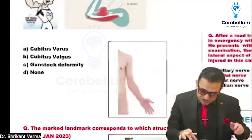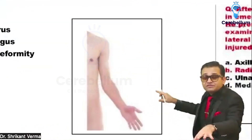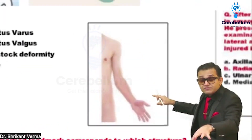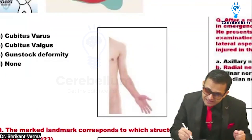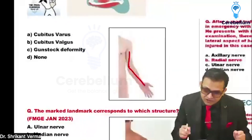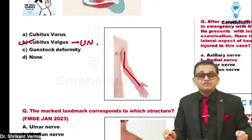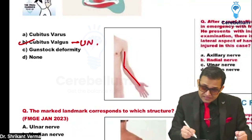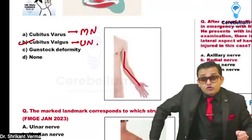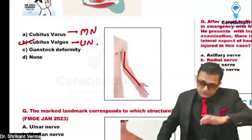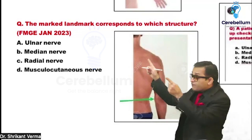The next question shows an image from orthopedics. You know the carrying angle — when the hand deviates to the outer side, this is cubitus valgus, and the answer is ulnar nerve damage. Remember, median nerve damage from a supracondylar fracture results in cubitus varus. So we have to learn both cubitus varus and cubitus valgus.